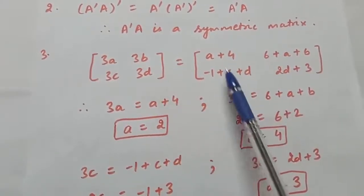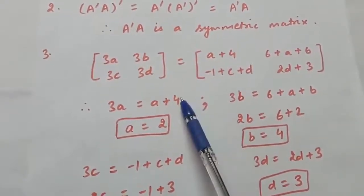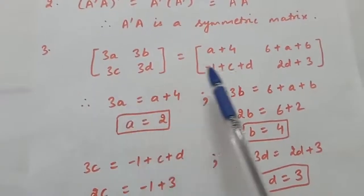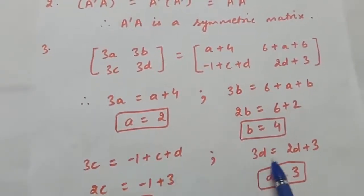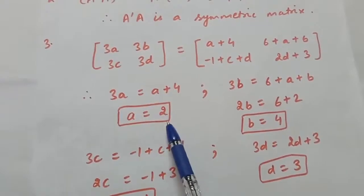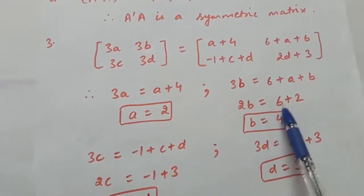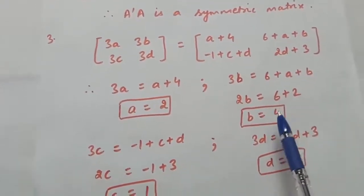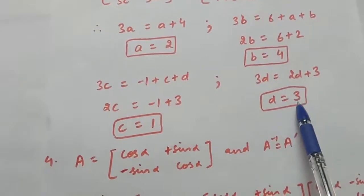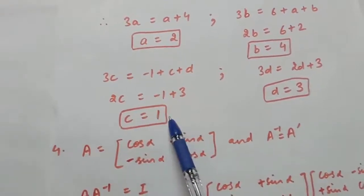Because these two matrices are equal, corresponding elements will also be equal. So 3A = A+4, giving A = 2. Then 3B = 6+A+B, so 2B = 6+2, giving B = 4. From 3D = 2D+3, D = 3. Substituting D into the third equation gives C = 1.